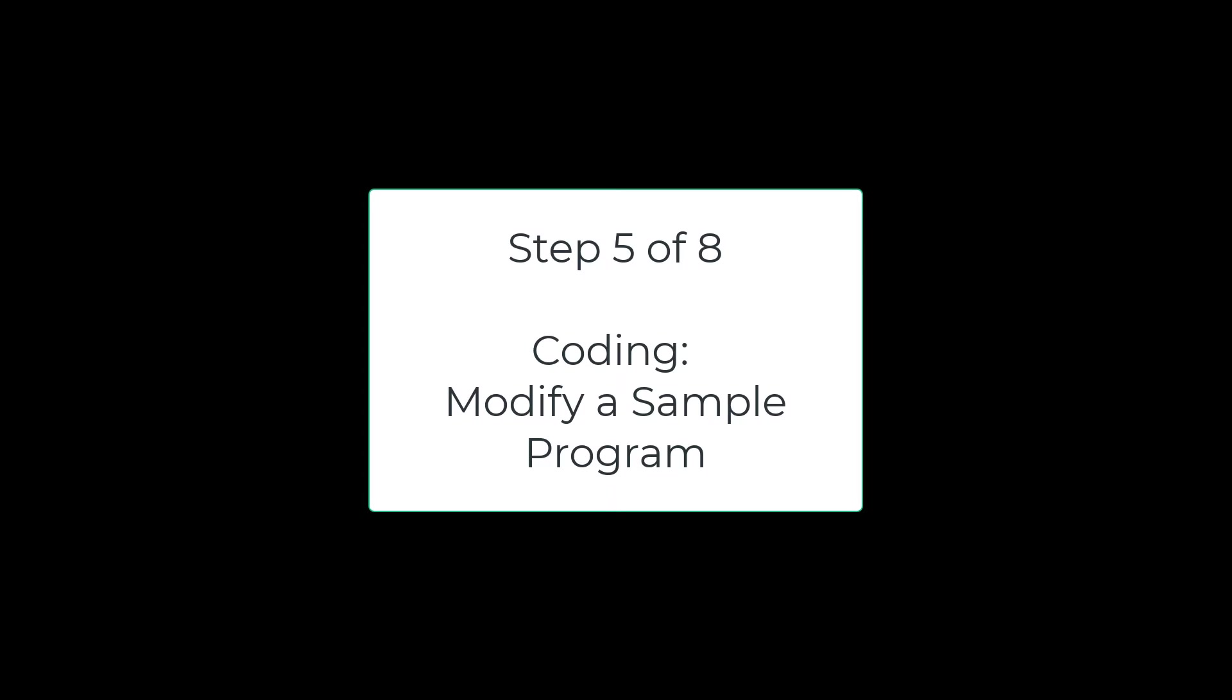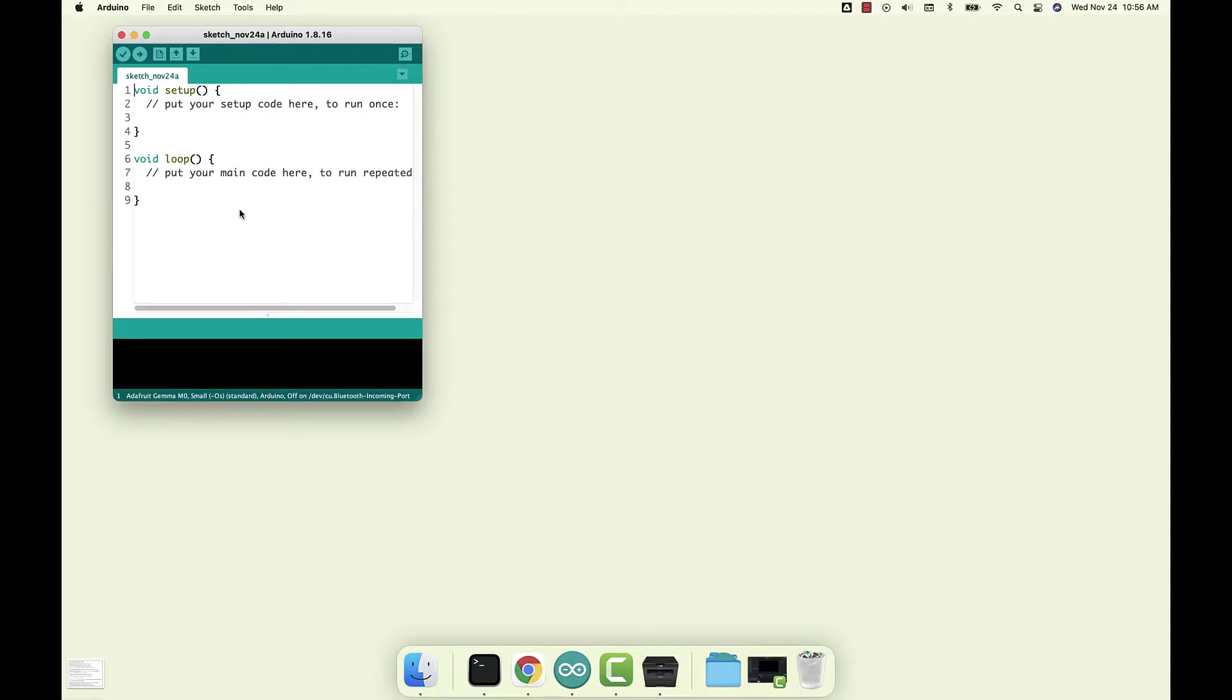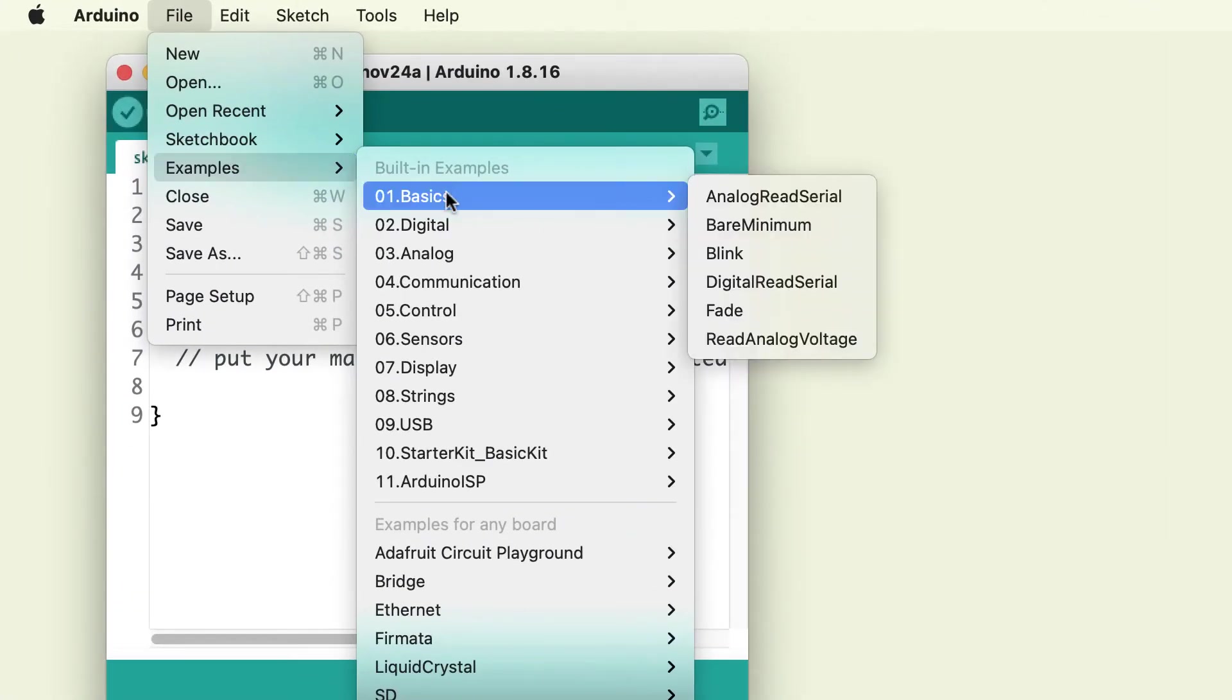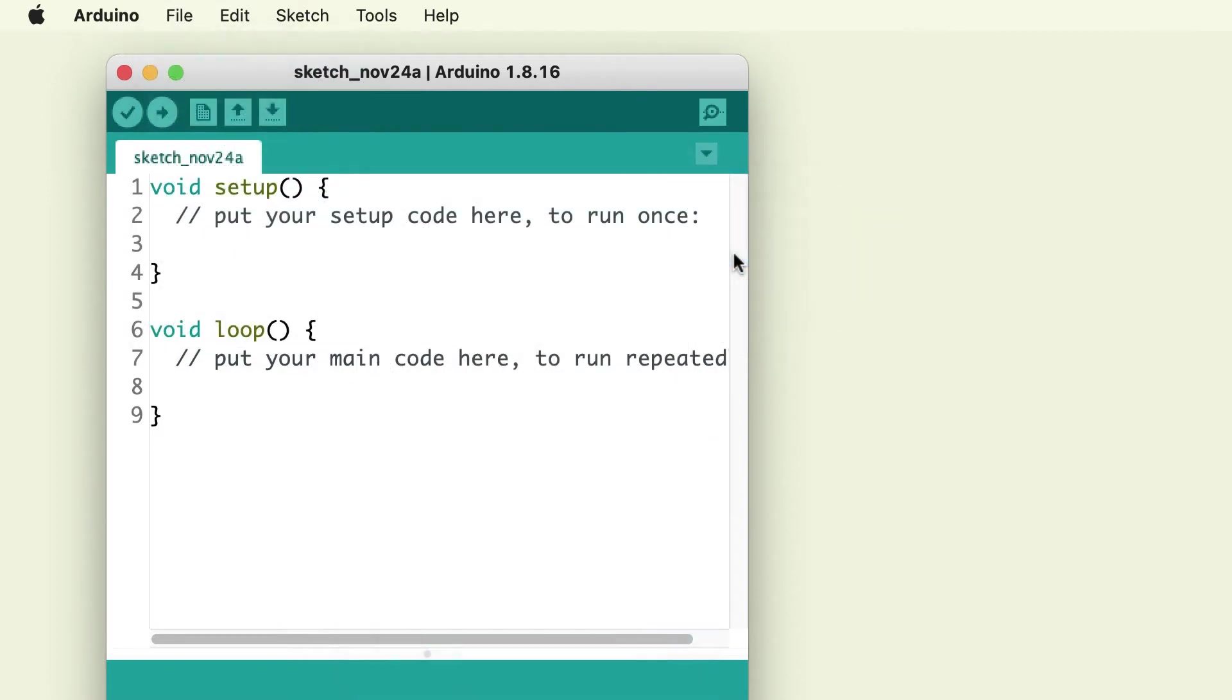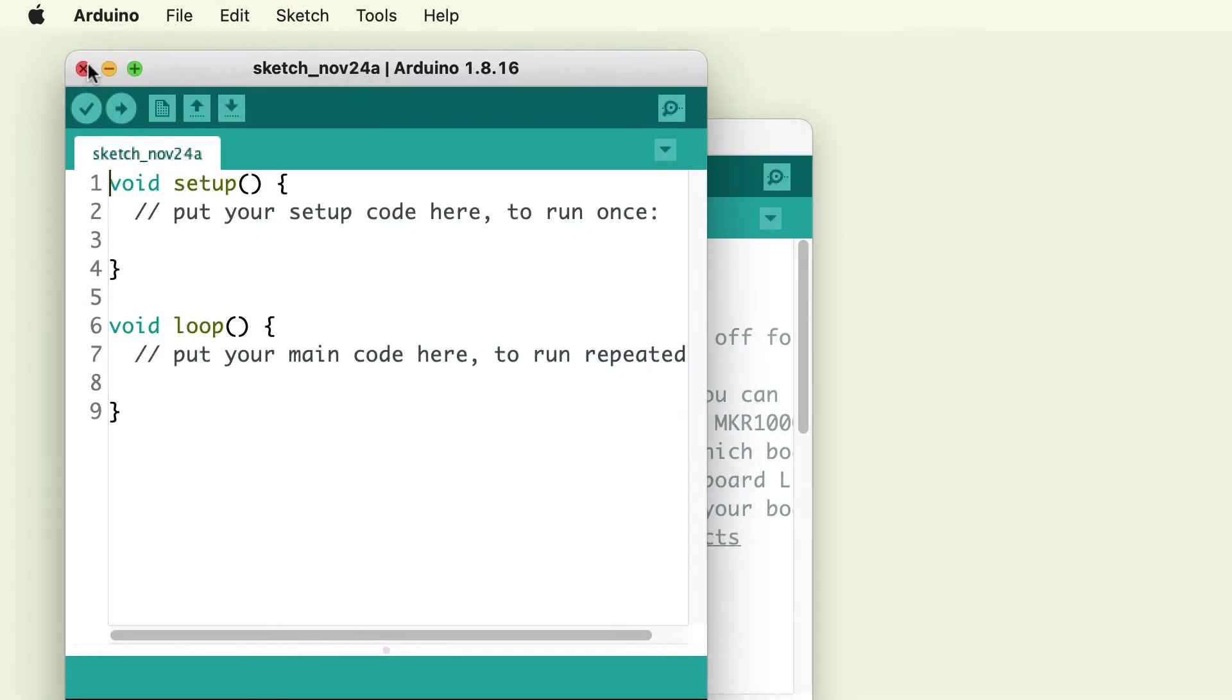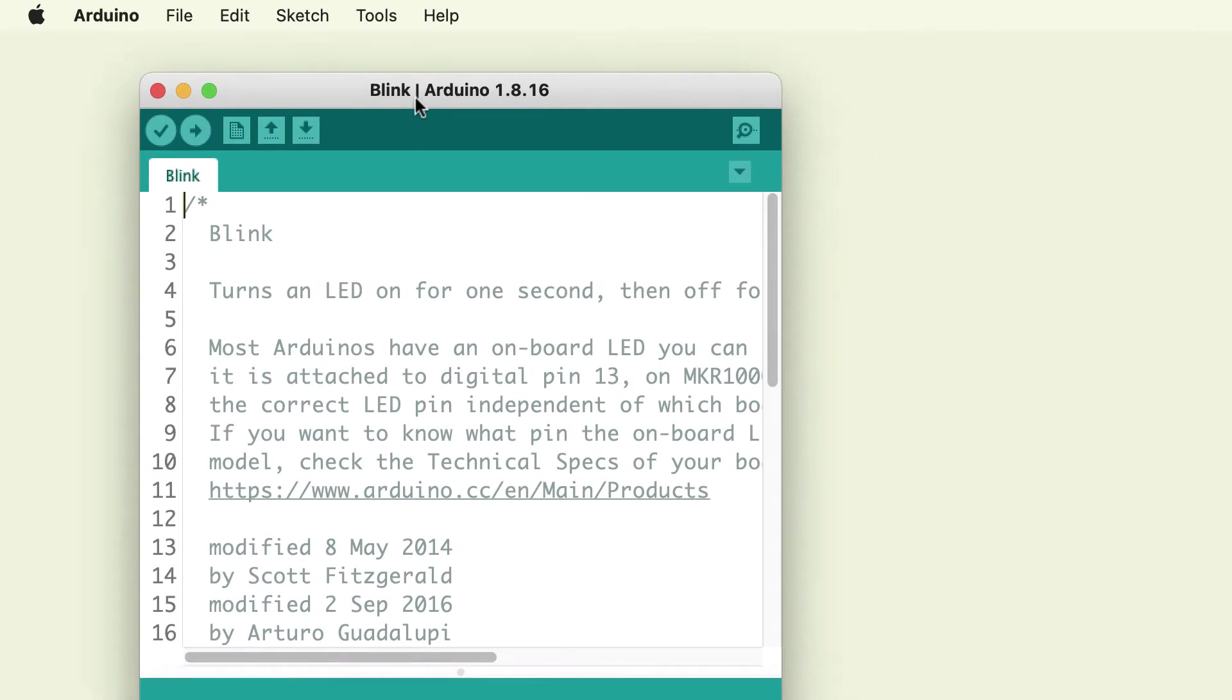Now let's work with some code. All right. A typical first program when we're working with LEDs is to make those lights blink. So under file, there's an examples sub menu. The first one is basics. And in there, you'll find blink. We'll open that one up. Now there's another sketch still open. I'm going to close that one. There we go.